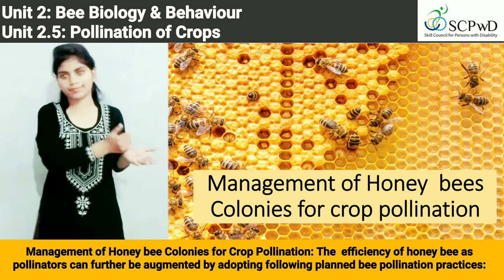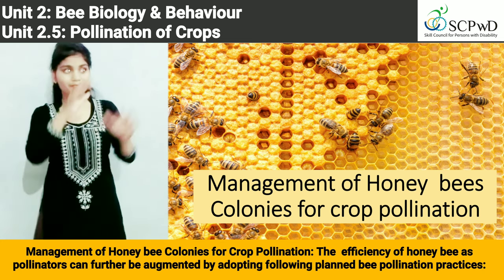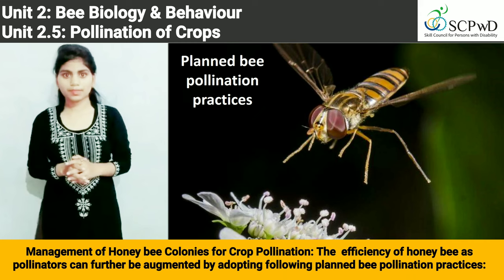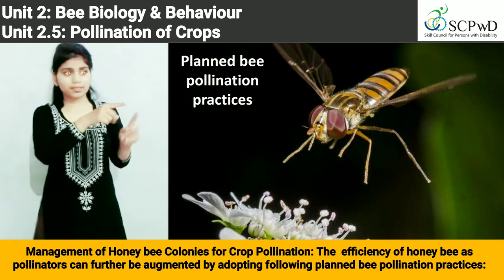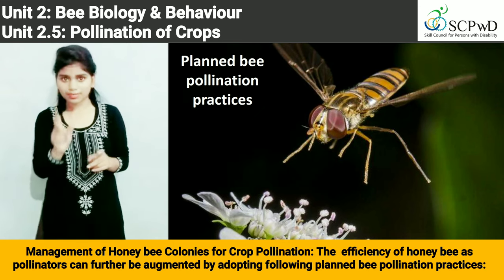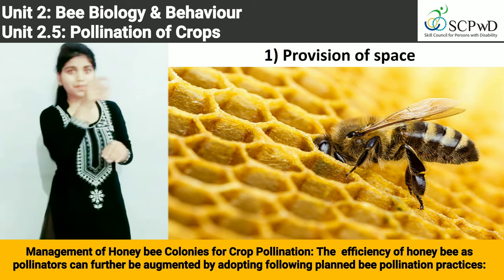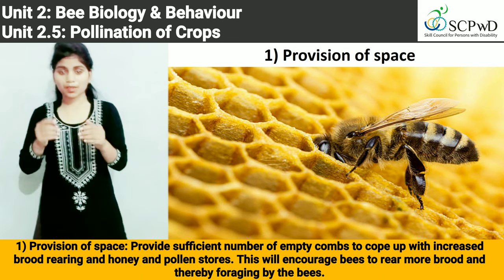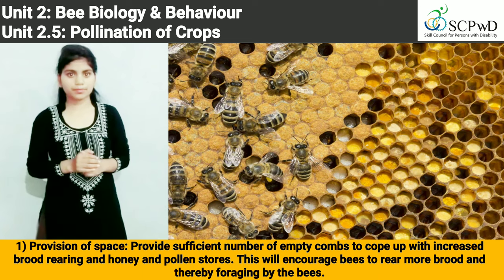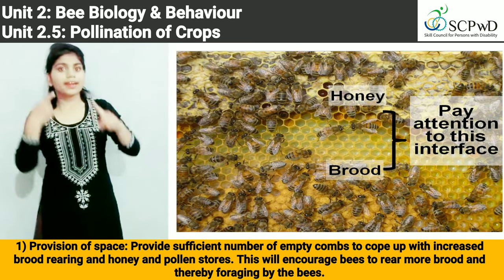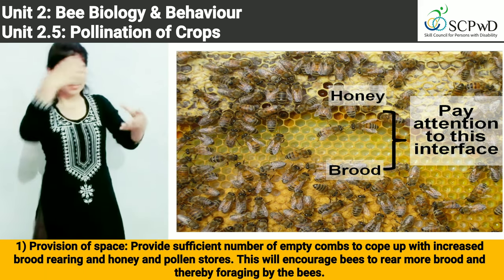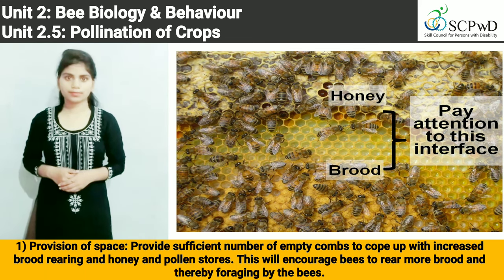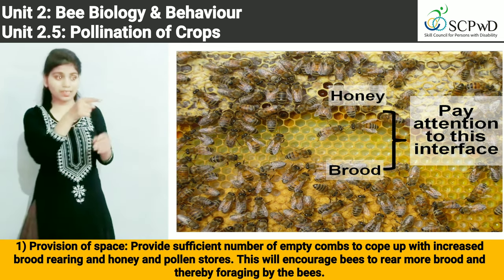Management of honeybee colonies for crop pollination. The efficiency of honeybees as pollinators can further be augmented by adopting planned bee pollination practices. Number 1: Provision of space — provide sufficient number of empty combs to cope with increased brood rearing and honey and pollen stores. This will encourage bees to rear more brood and thereby increase foraging by bees.